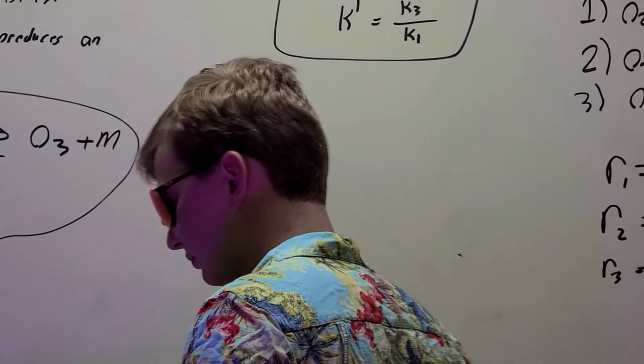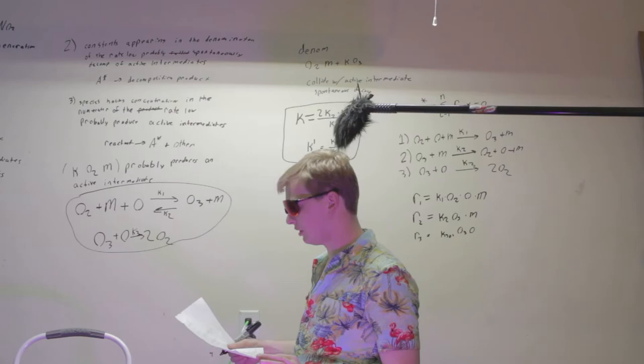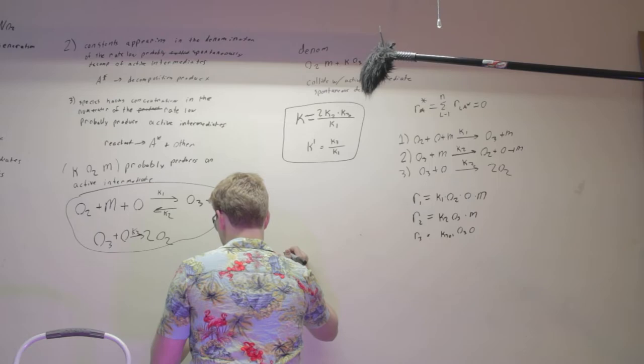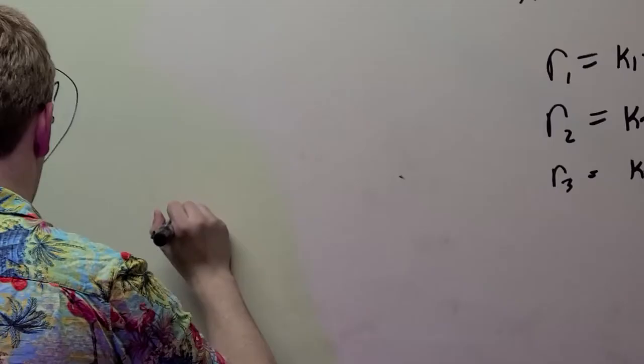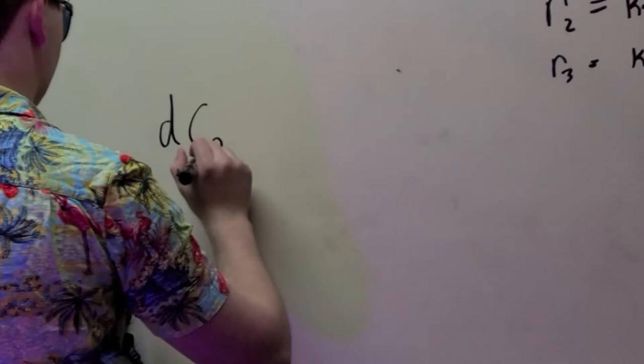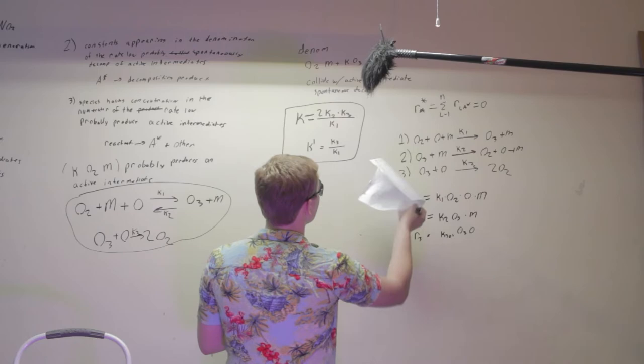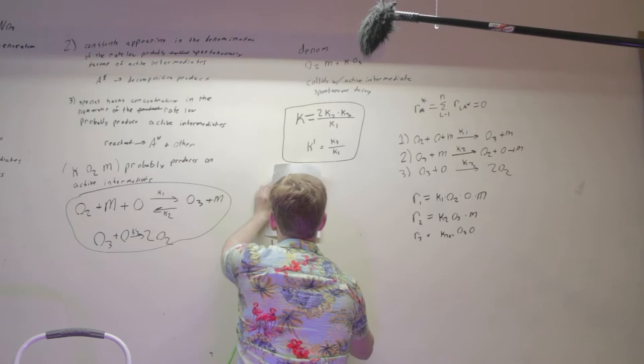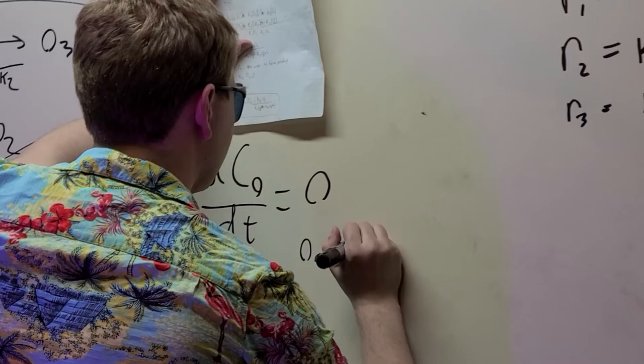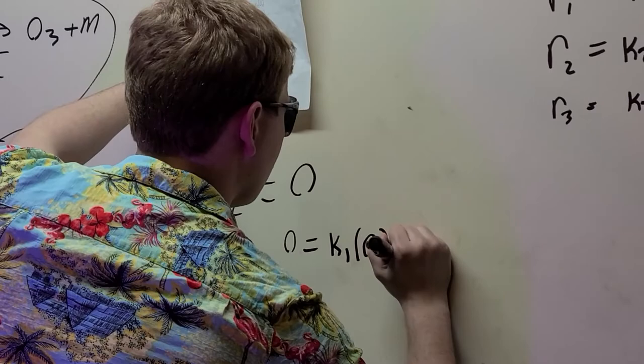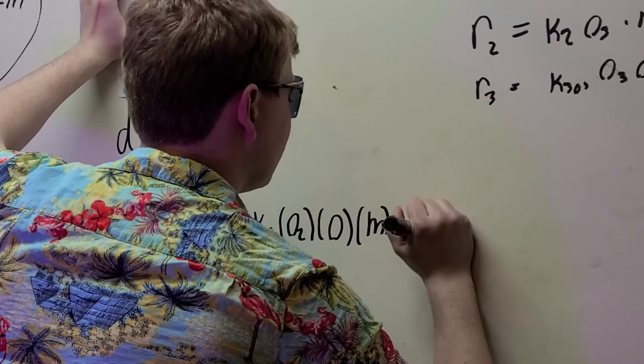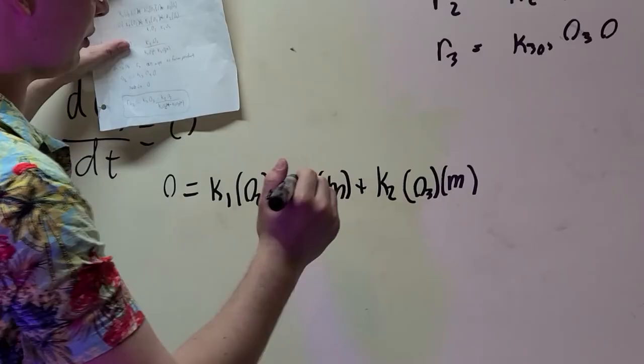As I said, use the TSSH. With this, we can say dO/dt is equal to zero. And then, we can say from this, using that, that this zero is equal to K1 O2 O and M plus K2 O3 M.